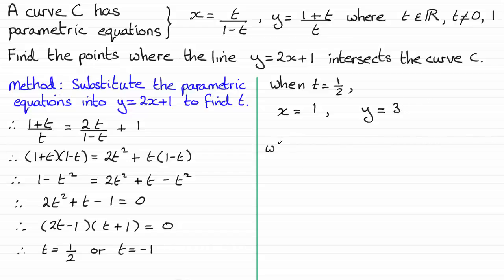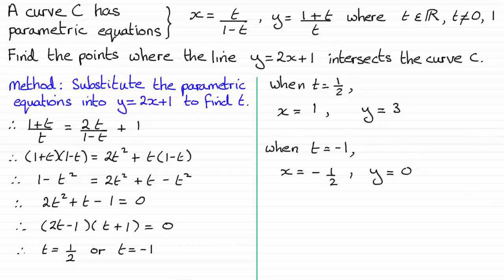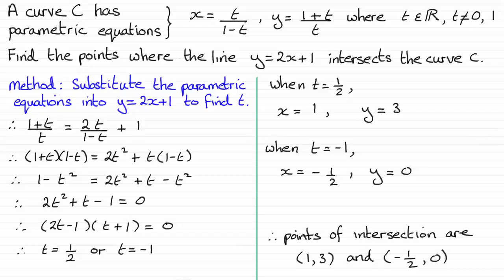When t equals minus 1, doing much the same: x equals minus minus 1 divided by 2, giving x equals minus a half. And y equals 0 divided by minus 1, which equals 0. So to summarise, the points of intersection are (1, 3) and (minus a half, 0). I hope that gives you an idea of how to do this type of question.